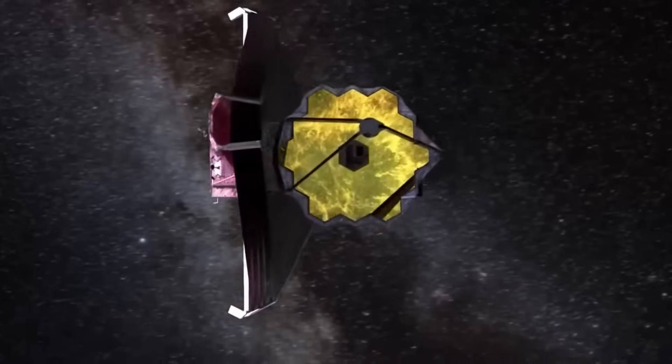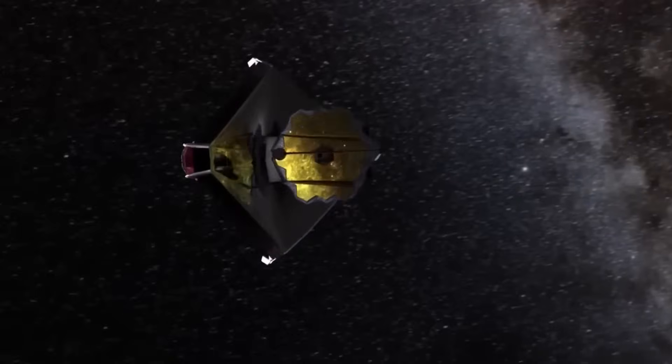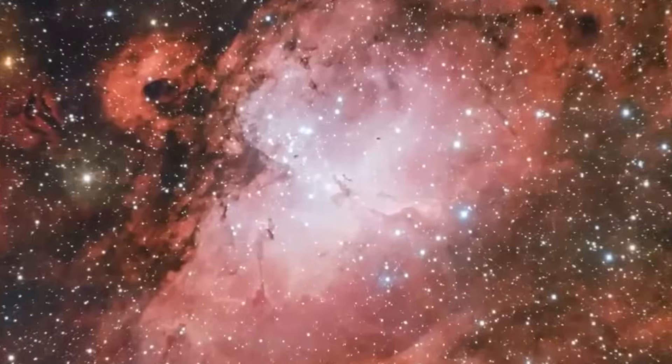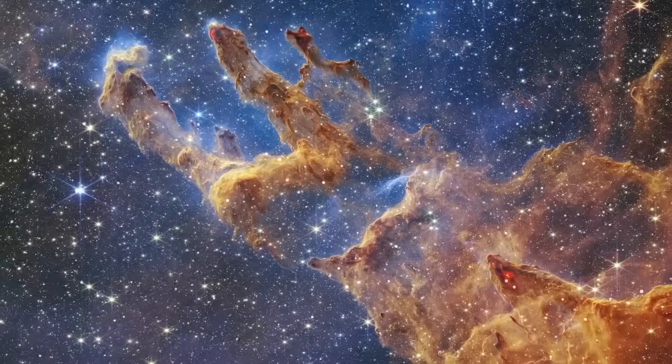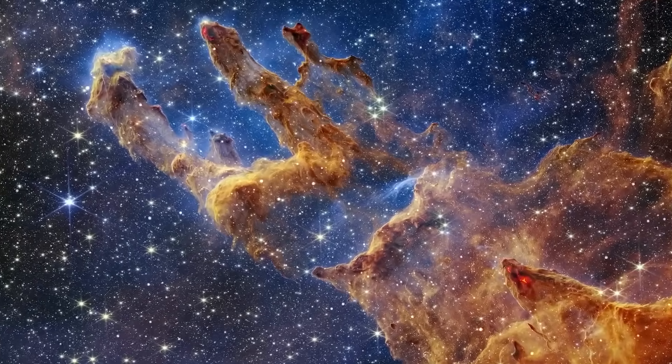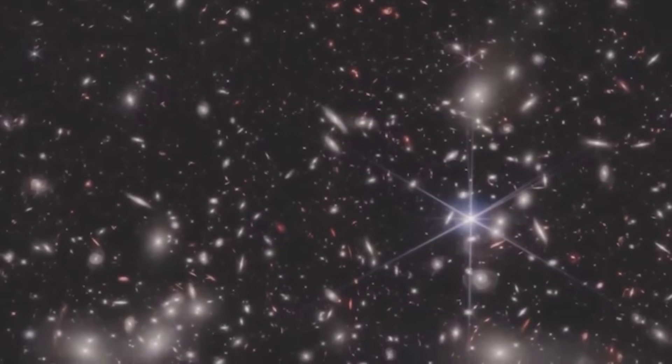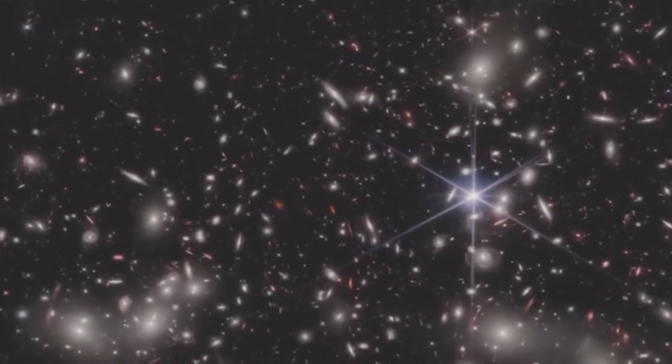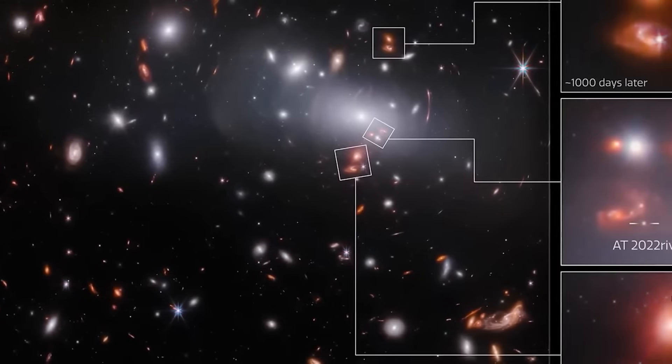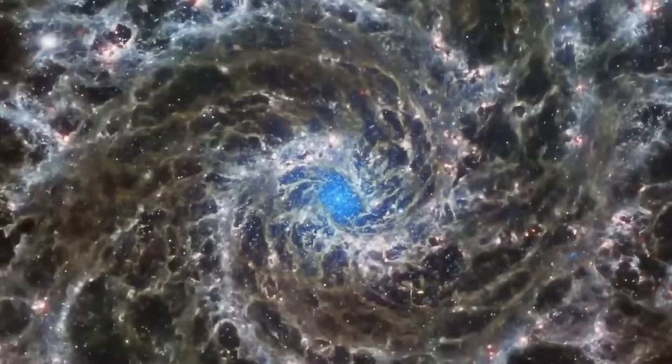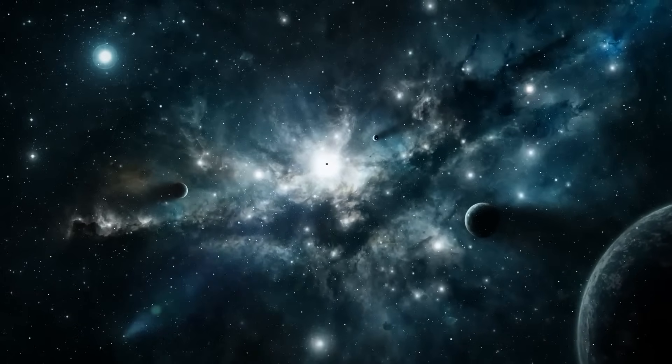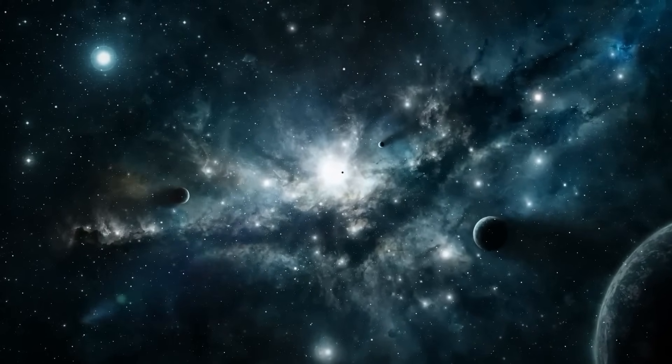The James Webb Telescope has provided new insights into one of the universe's greatest mysteries: dark matter. By observing gravitational lensing, where massive clusters bend light from objects behind them, Webb has created a detailed map of dark matter distribution. One of the most significant observations is the enhanced resolution of lensing effects, allowing scientists to better understand and estimate the mass and behavior of these invisible structures that make up 27% of the universe. This breakthrough brings us closer to understanding the elusive nature of dark matter and its role in shaping the cosmos.